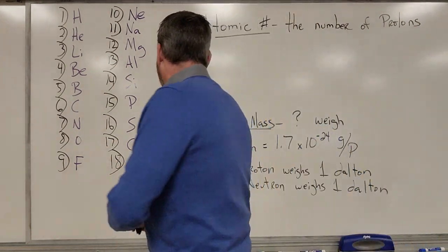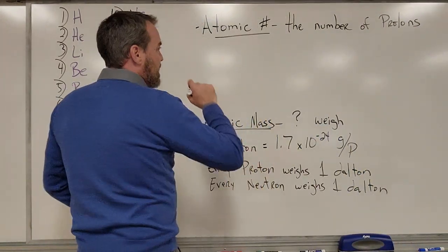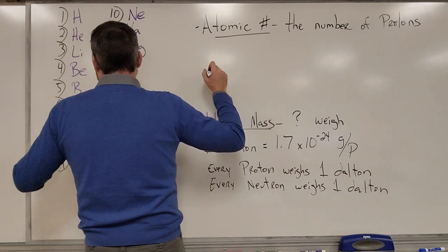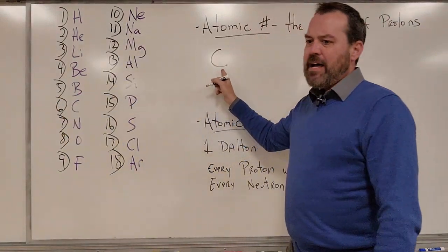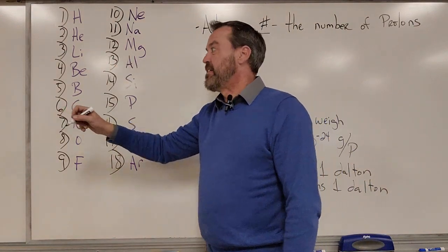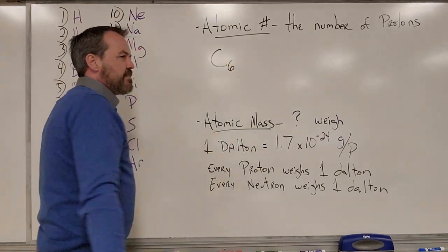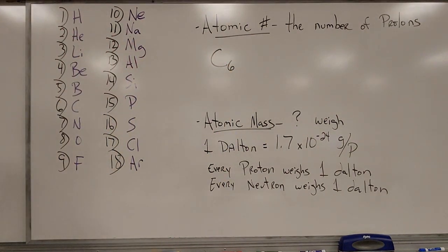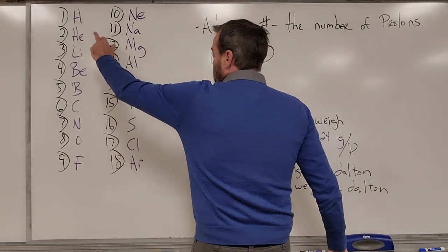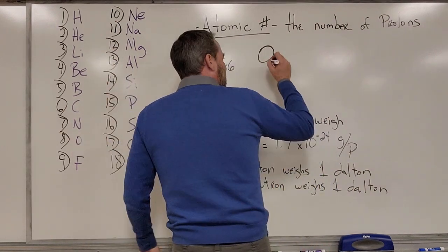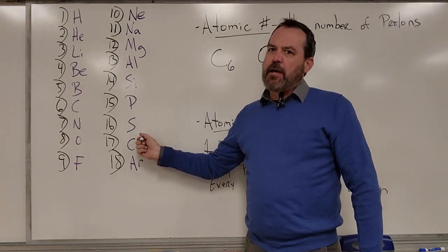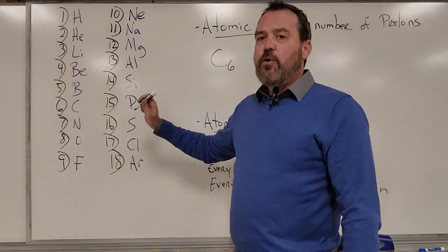The atomic number is most often written as a subscript. For example, carbon — C — is number 6, which tells me carbon has 6 protons in its nucleus. Oxygen is number 8, so oxygen has 8 protons. You have to know this by memory, because I'm not going to give this to you at test time. Chlorine is number 17, so chlorine has 17 protons in its nucleus.